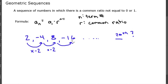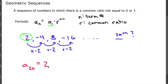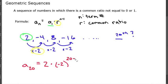To get from 8 to negative 16, we're again multiplying by negative 2, since it goes from positive to negative. We want to find the 20th term, so a sub 20 equals a sub 1 — our first term, which is 2 — times our common ratio, negative 2, to the 20 minus 1.